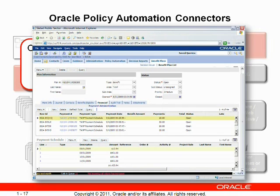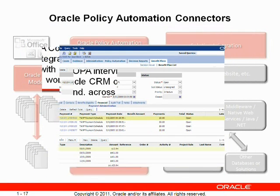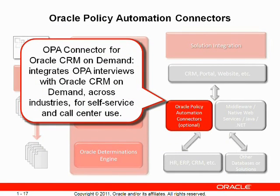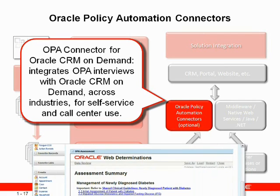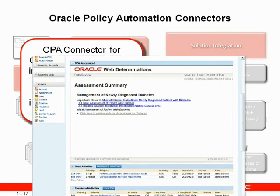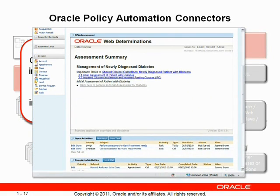For example, natural language policies can derive benefit payments from legislative policy or ensure service requests are properly prioritized and dispatched based on complex service level agreements. The OPA Connector for Oracle CRM On Demand integrates OPA interviews within Oracle CRM On Demand, across industries for self-service and call center use.